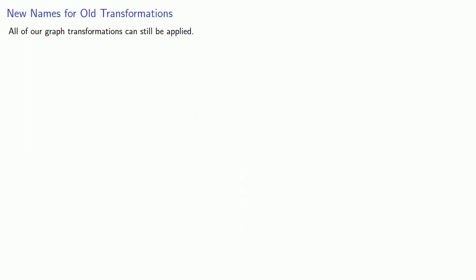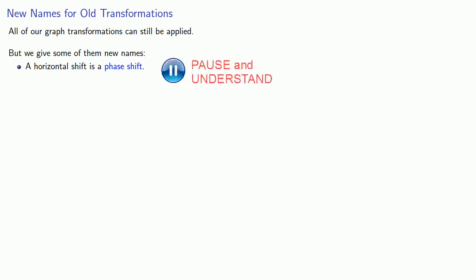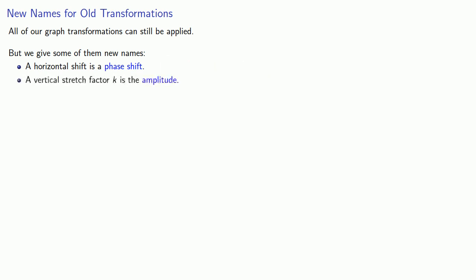Since this is a graph, all of our graph transformations can still be applied, but we give some of them new names. What we used to call a horizontal shift is also called a phase shift. And if we had a vertical stretch factor of k, we're going to call that the amplitude.